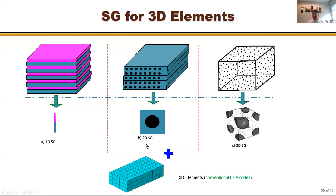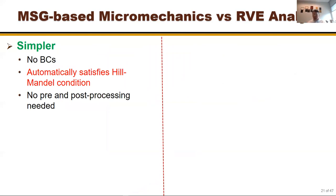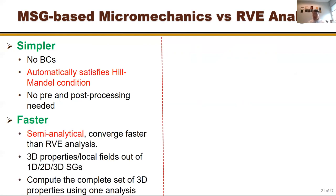After the global analysis, if you want to know the stress within the fiber, you perform de-homogenization based on the stress computed at the macro level. This is similar to a general micromechanics approach, but differs from traditional RVE analysis. The most difficult part of RVE analysis is applying the correct boundary conditions — this approach removes that requirement. It also automatically satisfies the Hill condition, and there's no need for load application, stress averaging, or multiple separate analyses to compute Young's modulus.